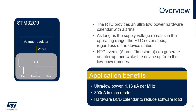The RTC peripheral features an ultra-low power calendar with alarm, which runs in sleep and stop modes. As long as the supply voltage remains in the operating range, the RTC never stops, regardless of the device status. The RTC consumes only 1.13 microamps per MHz. The hardware calendar is provided in binary-coded decimal, or BCD, format to reduce software load, particularly when the date and time must be displayed.